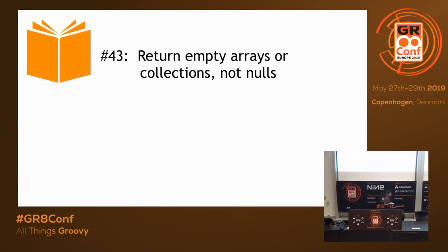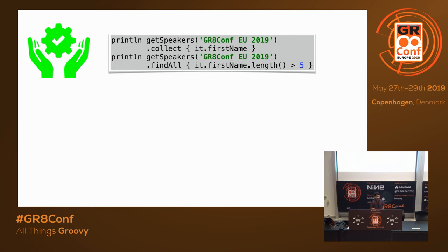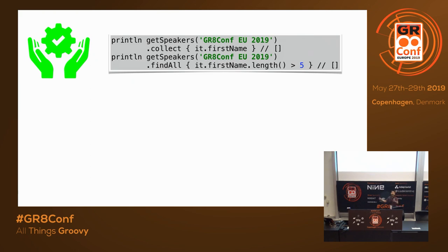Say you are in a team of all Groovy developers and a mischievous developer decides to return null instead of an empty collection. I call getSpeakers, then call collect (a map operation) to get the first name. I also call findAll on the null return. In both cases I get an empty list. Even if some developers wanted to cause trouble, if you're in Groovy you're protected — Groovy takes care of that.